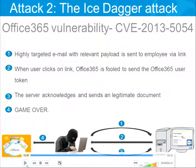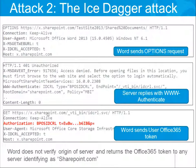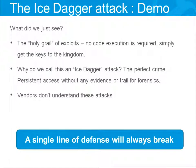Now you can access any sensitive document, change it, read it, and have persistent access to it. And no one will ever know — it doesn't go through any of your controls. What we saw here is a highly targeted email sent to the user. The user just opened the email and got the document, but in the background what really happened was that Word sent the user's Office 365 token to the attacker's server after being masqueraded as SharePoint.com. There was no logs, no nothing. There's no trace of this attack.